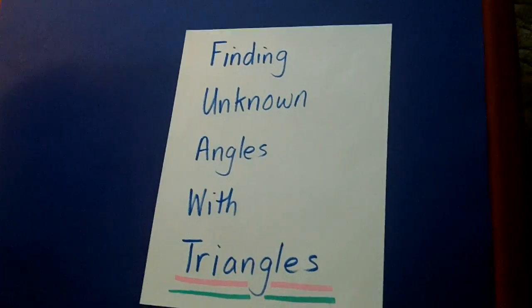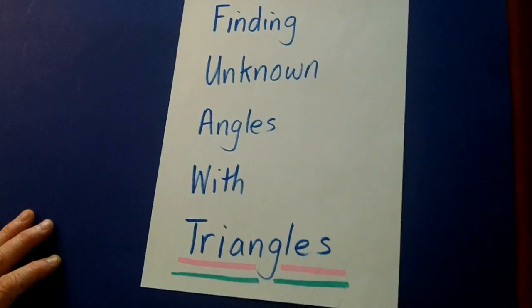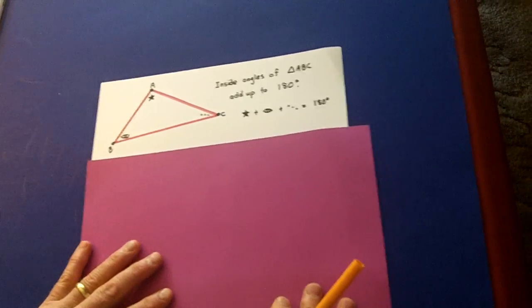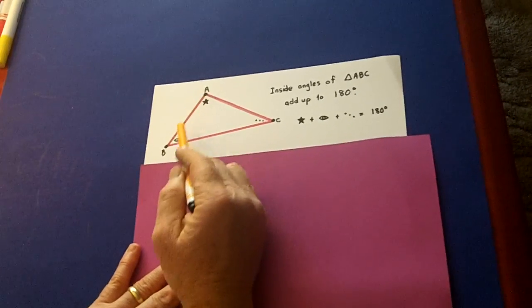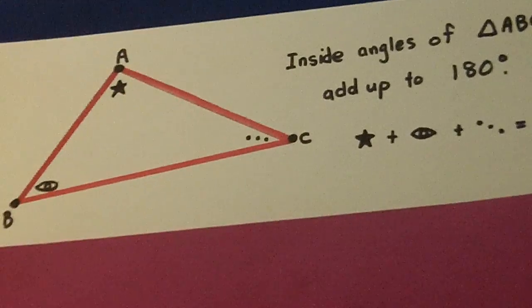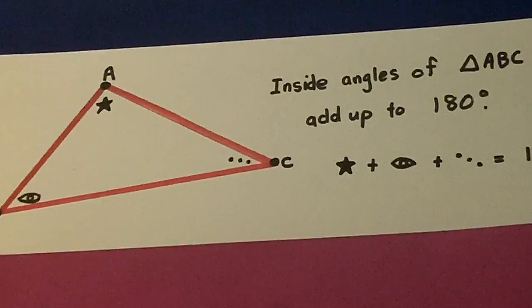This lesson will delve into finding unknown angles with triangles. We have to start out with a basic truism. The truism is that all three inside angles add up to 180 degrees, kind of like supplementary angles.